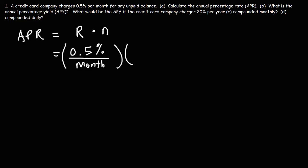Now, in one year, how many months are there? We know that there's 12 months per calendar year. And so the annual percentage rate, or the interest rate that they're charging per year, is going to be 0.5% times 12. Half of 12 is 6%. So the APR is 6% per year. So that's how you can calculate the APR in this particular example.